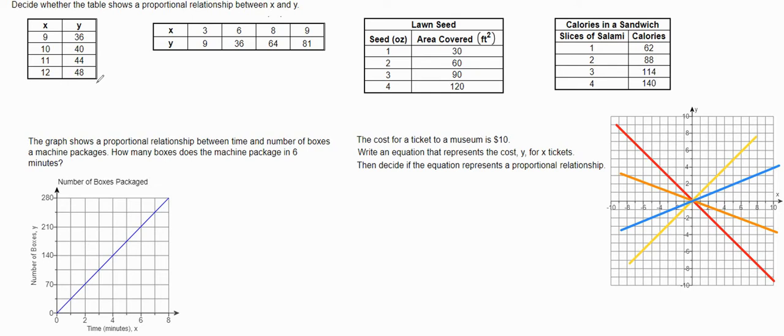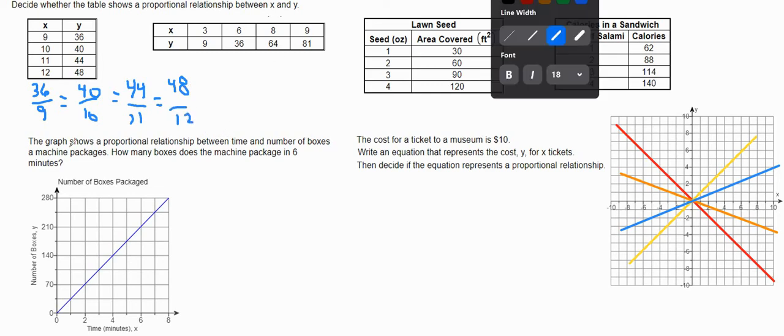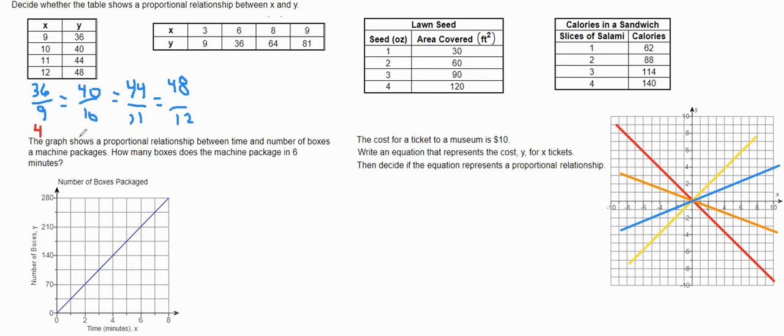We're going to determine if these tables show a proportional relationship, and if so, all the fractions that we divide need to be the same. For this first table, does 36 over 9, comparing the y over the x values, do these all equal the same thing? 40 over 10, 44 over 11, and 48 over 12. If all of these are the same, then it's proportional. Well, 36 divided by 9 is 4, 40 divided by 10 is 4, 44 divided by 11 is 4, and 48 divided by 12 is 4. So this one is yes.